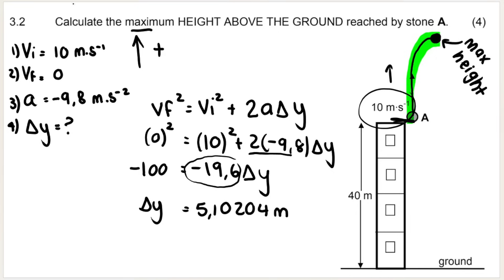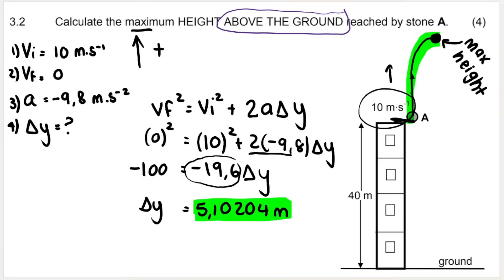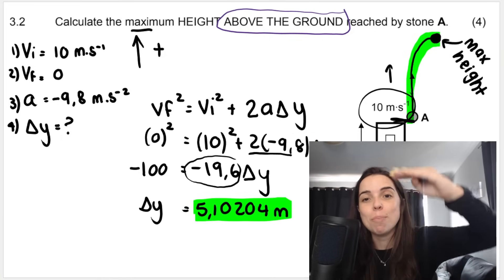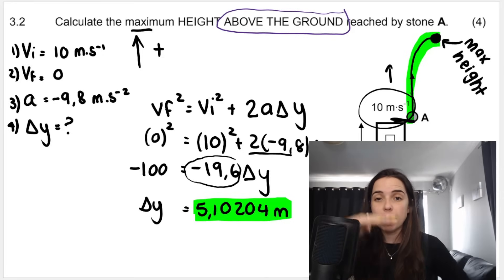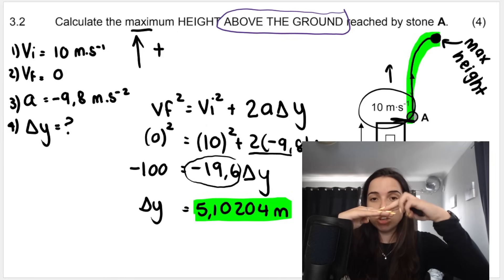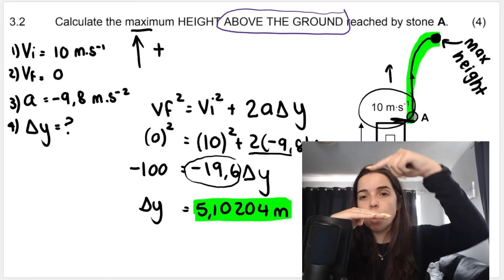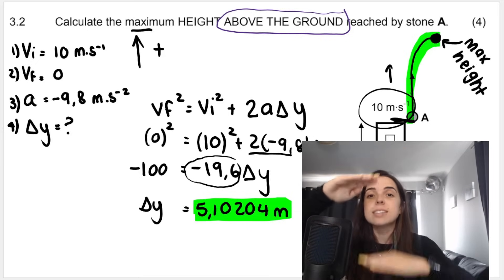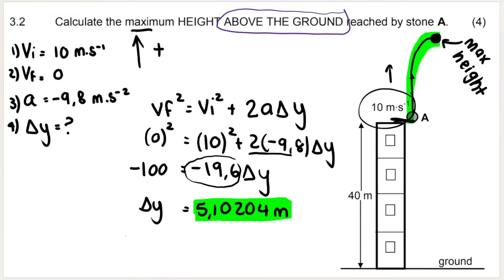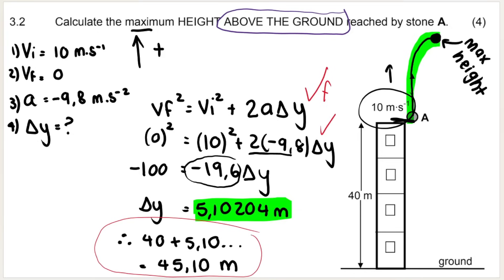The question asks for maximum height above the ground, not above the building. The stone starts at the top of the building, which is 40 meters above the ground, and goes 5.1 meters above that. So you add: 40 + 5.10 = 45.10 meters. This question is out of four marks. If you didn't do this last step, you'd only get marks for your formula and substitution — you'd miss the method mark and final answer mark. Read carefully.